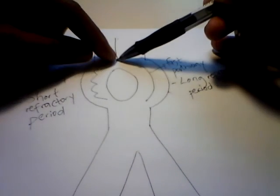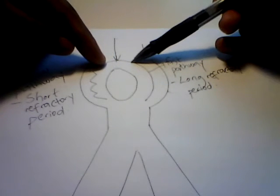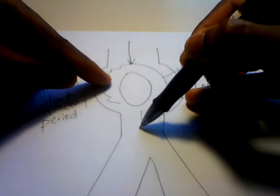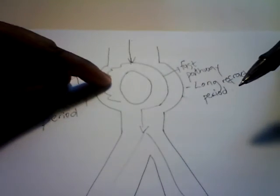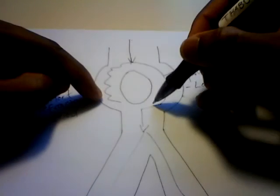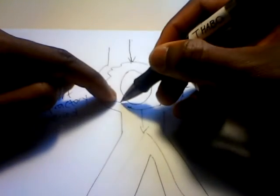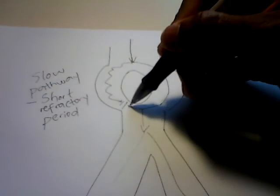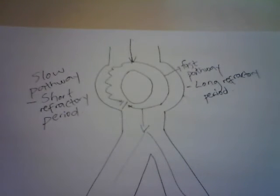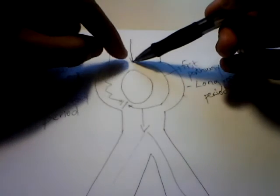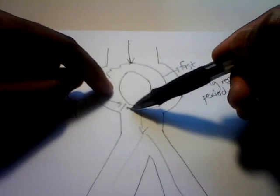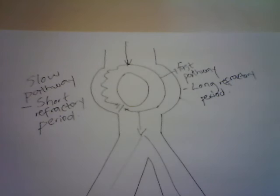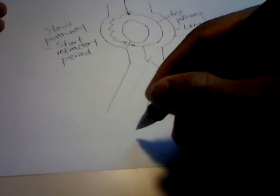The impulse comes and travels in both pathways. However, in the slow pathway it travels slowly, while in the fast pathway it goes quickly. By the time it arrives it's able to conduct down the His bundle, into the bundle branches, and activate the ventricles. The impulse tries to travel back up the slow pathway, but it blocks there because that tissue is still refractory. So that's normal conduction.